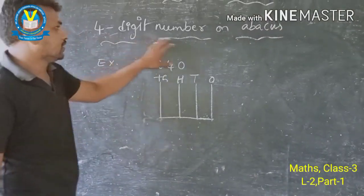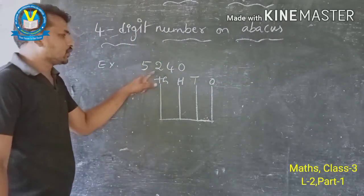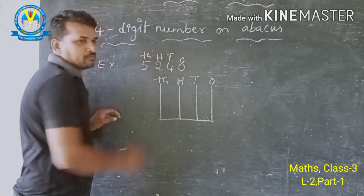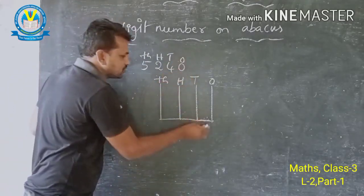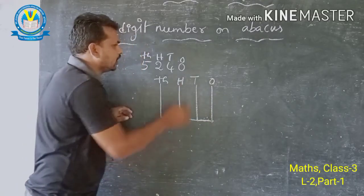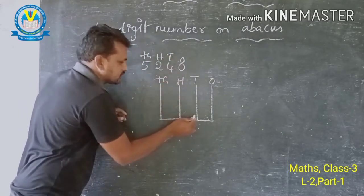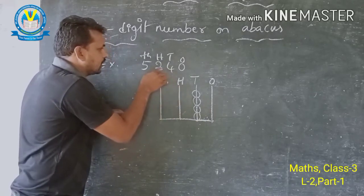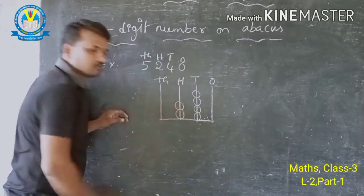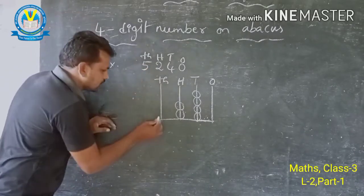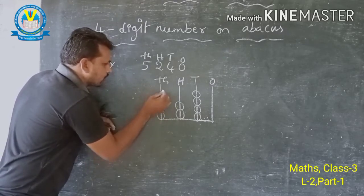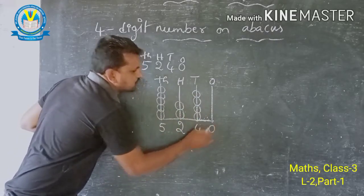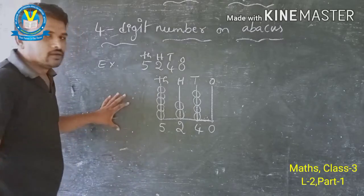Now, 4-digit numbers on the abacus. For example, 5240. The ones place has 0 beads. The tens place has 4 beads. The hundreds place has 2 beads. The thousands place has 5 beads.